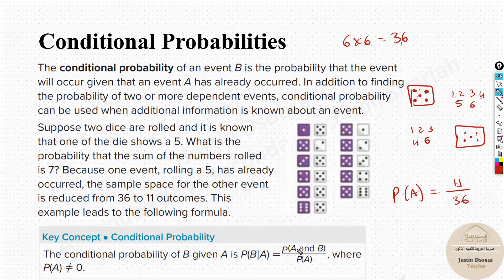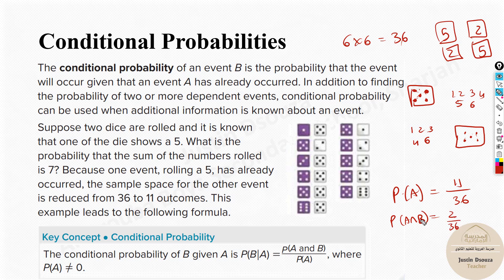Now, what is P(A ∩ B) — the probability that a five appears and the sum is seven? If one die shows five, the other must be two to make the sum seven. So there are only two possibilities: five-and-two, or two-and-five. Therefore P(A ∩ B) = 2/36. Applying the formula: P(B|A) = (2/36) ÷ (11/36). The 36s cancel, giving us 2/11.